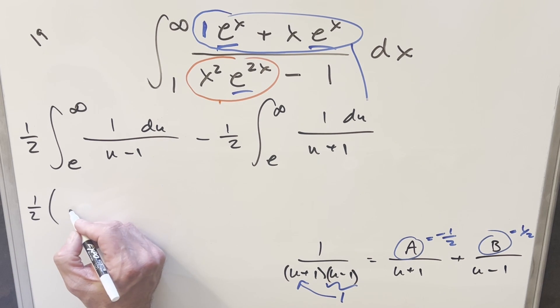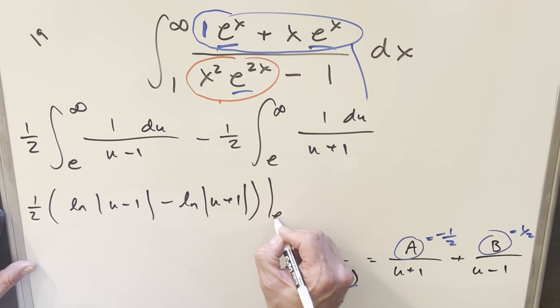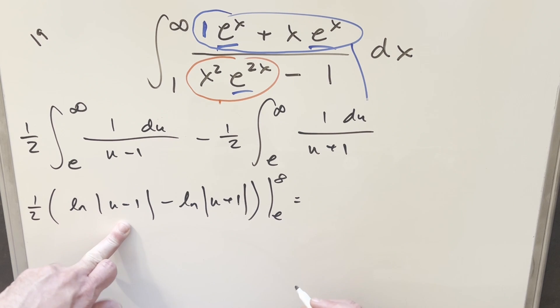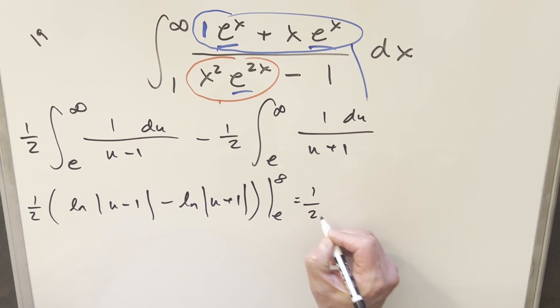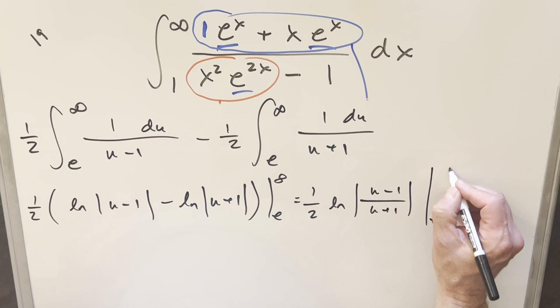But now we have two straightforward integrals. I'm just going to factor 1/2 out in front of everything now. And then here for this first one, this is going to become natural log absolute value u - 1. And then for the second one, we're going to have minus natural log absolute value u + 1. And this whole thing is going to be evaluated from e to infinity. But one thing I can do with log properties is actually put these together and make this a division. So with our 1/2 in front, I'll write this as natural log absolute value (u - 1)/(u + 1). And then we just need to evaluate.